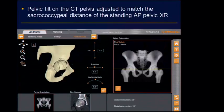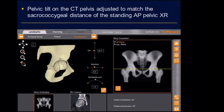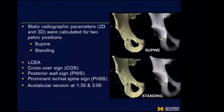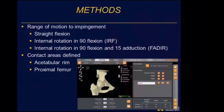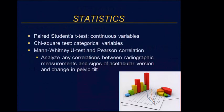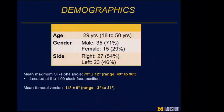We take measurements from our radiographs and can adjust this in the software to simulate supine and standing positions to see how that differs. We looked at static parameters in each of these positions: lateral center edge, crossover sign, and acetabular version. We also looked at range of motion in hip flexion, internal rotation in flexion, as well as impingement testing, and then standard statistical analysis between these two techniques.